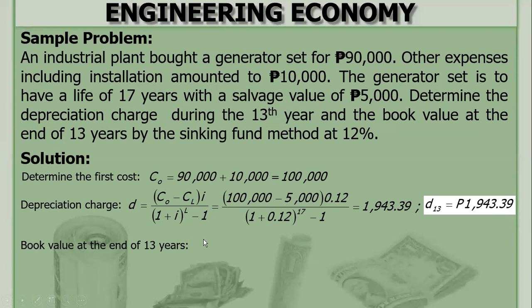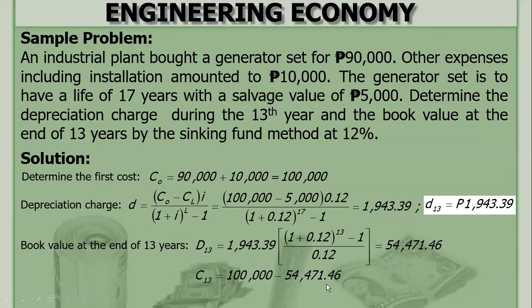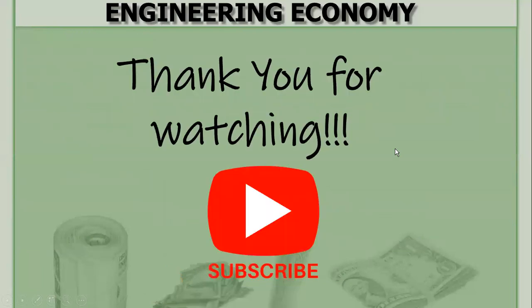To determine the book value, first solve for the total depreciation over 13 years, then subtract from CO. It's very simple. I hope you have learned something. All you need to do is solve more problems to become familiar with the topic. That would give you enough experience to solve problems on this topic. Thank you for watching.